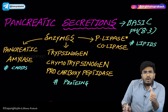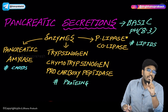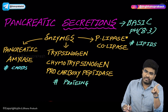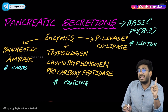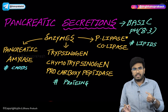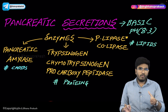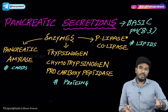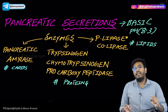In saliva, only carbohydrate digestion and lipid digestion are happening, but protein digestion is not happening, because there is no enzyme for protein digestion in saliva. When discussing digestion inside the stomach, there is protein digestion with the help of pepsinogen, and digestion of lipids with the help of gastric lipase, but there is no carbohydrate digestion in the stomach.